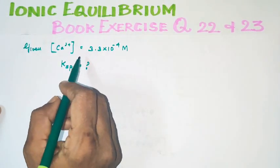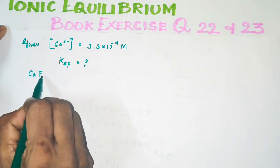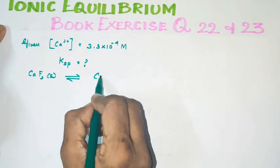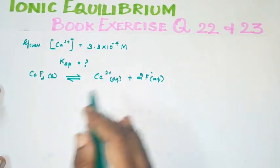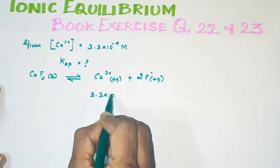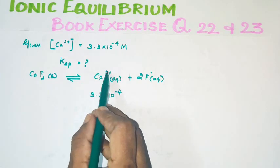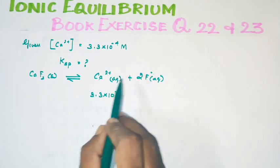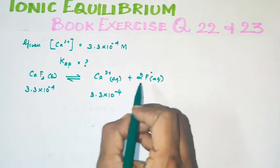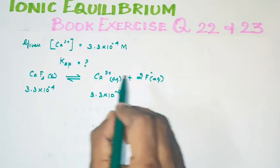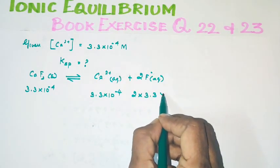Itadhaan Ca²⁺ oda concentration kudu thirukkangan. CaF2 is dissolved in water — CaF2 (solid) dissociates into Ca²⁺ ions plus 2F⁻ ions. So, concentration of Ca²⁺ is 3.3 × 10⁻⁴. From the equation, 1 mole of CaF2 gives 1 mole of Ca²⁺ and 2 moles of F⁻.